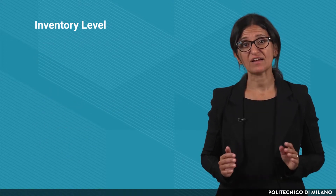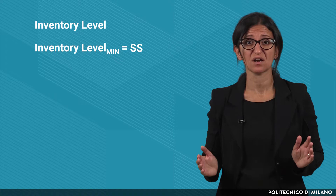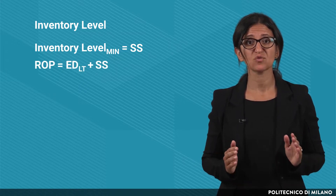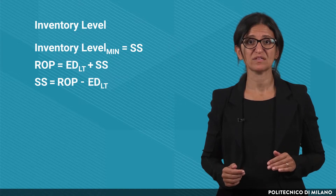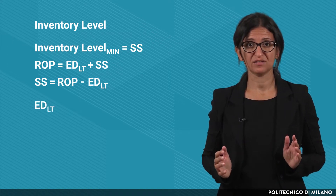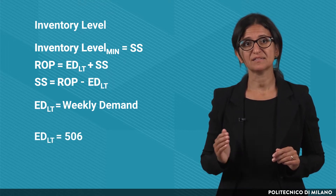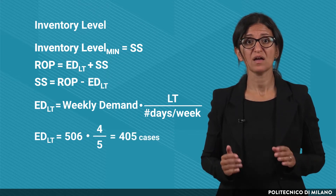Let's start from the inventory level. In order to draw its pattern, we need to identify the minimum and maximum inventory levels. The minimum value of the inventory is equal to the safety stock level. Since the reorder point is the sum of the demand during the lead time and the safety stocks, the safety stocks equal the reorder point minus the expected demand during the lead time. The expected demand during the lead time is calculated as the weekly demand multiplied by the lead time in weeks — 4 days divided by 5, assuming 5 days per week.